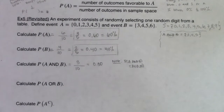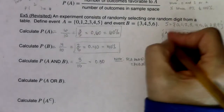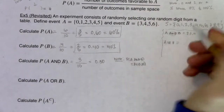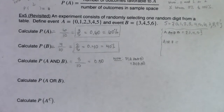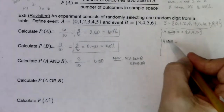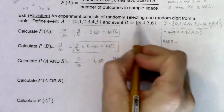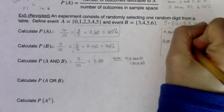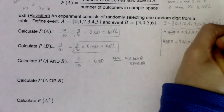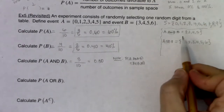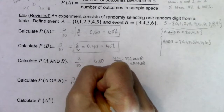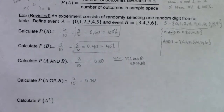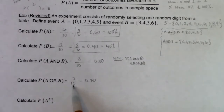The next thing is the probability of A or B. 'Or' means you want to combine the lists, not find the overlap. Combining A and B gives 0, 1, 2, 3, 4, 5, and 6 — that's seven outcomes. So the probability of A or B equals 7 out of 10, or 70%. Whatever's in the parentheses, find how many outcomes are in there for the numerator, and how many are in the sample space for the denominator.